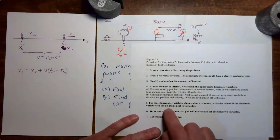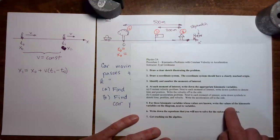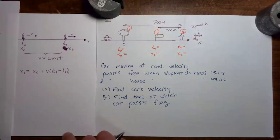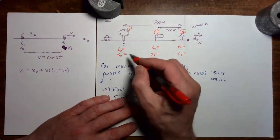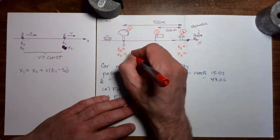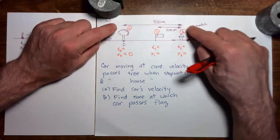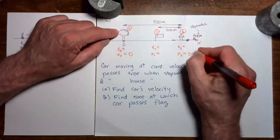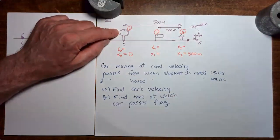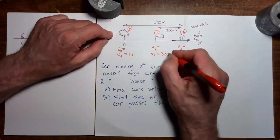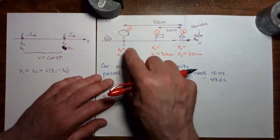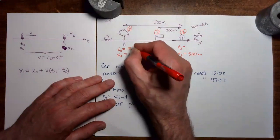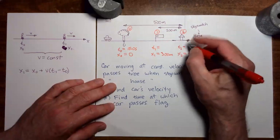Step five: for kinematic variables whose values are known, write those values on the diagram. We decided the tree is at the origin, so x0 equals 0. The house is 500 meters from the tree, so x2 equals 500 meters. The flag is 200 meters behind the house, so x1 equals 300 meters. The car passes the tree when the stopwatch reads 15 seconds, and passes the house when it reads 47 seconds.